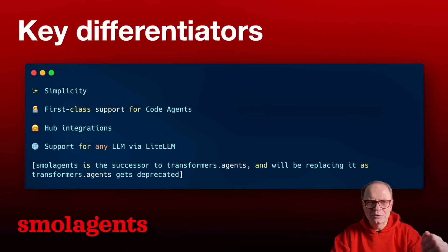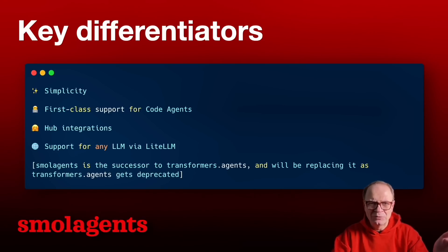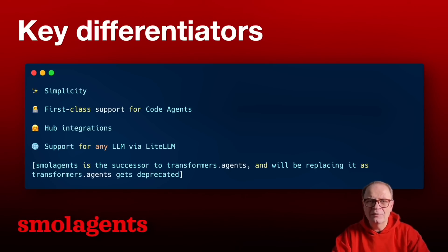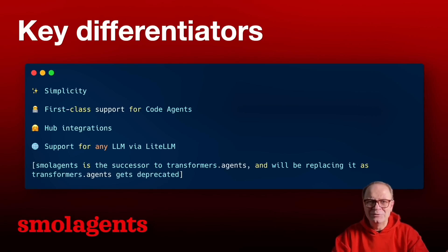Let's look at some of the core differentiators. Number one: simplicity — the logic for agents fits in a couple of thousand lines of code. Second, code agents are first class — agents that write their own actions in code. Third, hub integrations — you can share and load tools from the hub. Fourth, support for any LLM; HuggingFace has a great number of large language models listed, and you can use any HuggingFace model as well as models outside HuggingFace. And finally, SmolAgents is the successor to Transformers.Agents, combining all their learnings into this new framework.